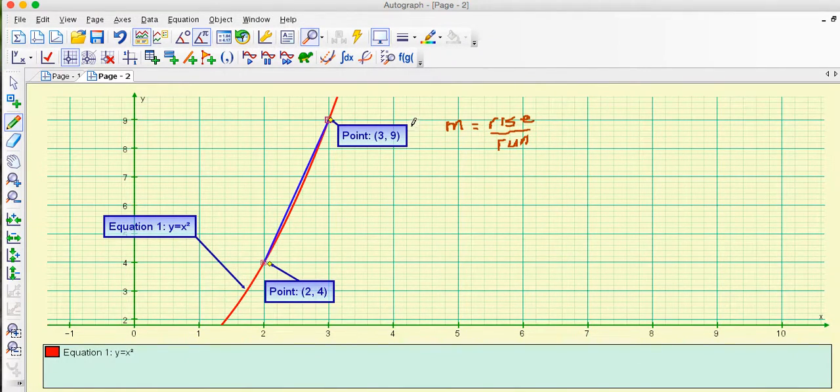So for this one thinking about it at 3,9 my rise is the y number 9 take away the 4. So for this one it's 9 take away 4 divided by and I need to do this one here which is 3 take away 2. So I can do it with numbers like that and it will get the gradient of the line.